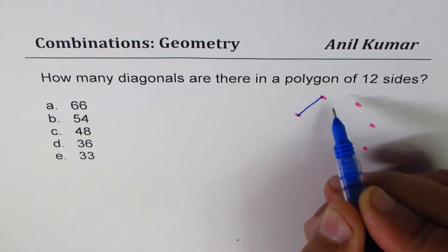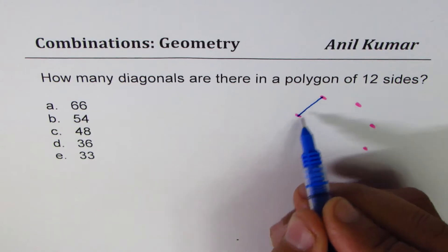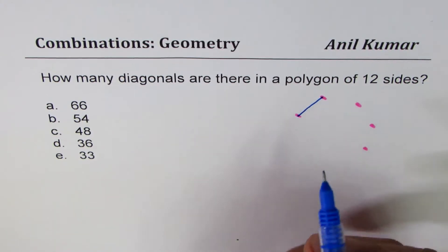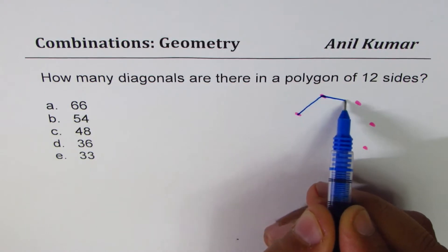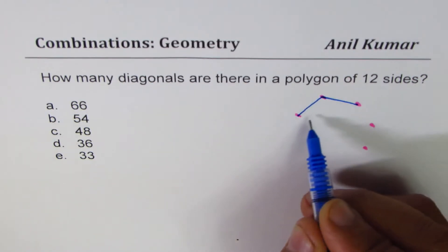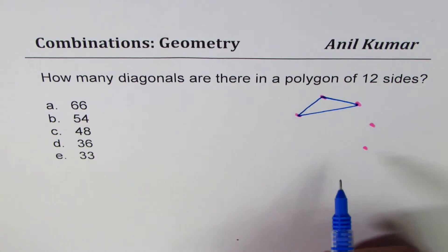If I join two points, we don't even make a polygon. Not even, no diagonals at all. Joining three points, we could make a triangle. However, a triangle does not have any diagonals.